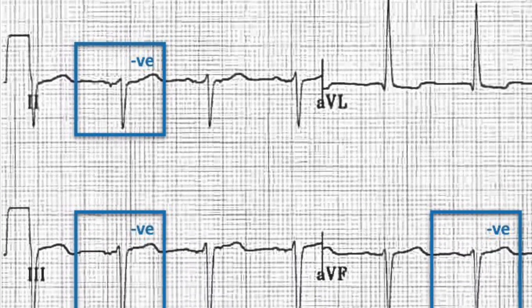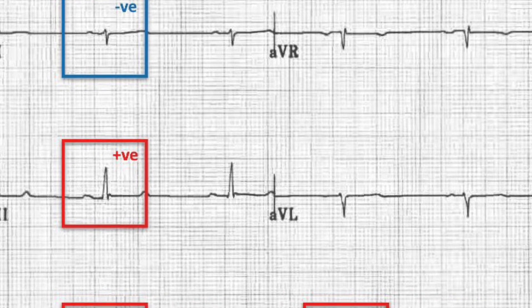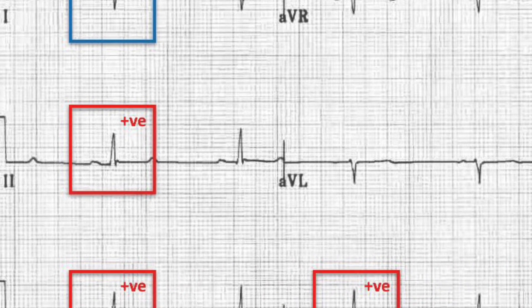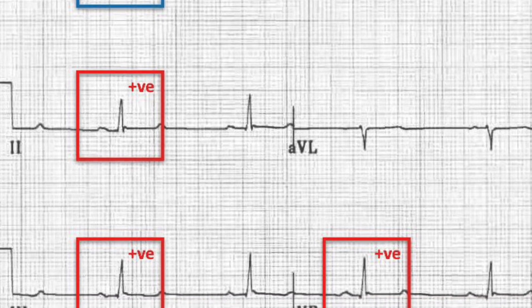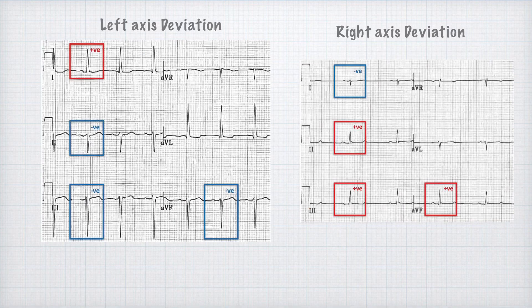In right axis deviation, there is prominent negative deflection in lead 1 and prominent R wave in lead 3. To remember, it is simplified as left leaves and right reaches. That is, imagine lead 1 above and lead 3 below. So, left leaves means QRS complexes leave each other in left axis deviation in lead 1 and lead 3. Same way if lead 1 imagine above and lead 3 imagine below, right reaches in right axis deviation, which means QRS complexes reach each other in right axis deviation.